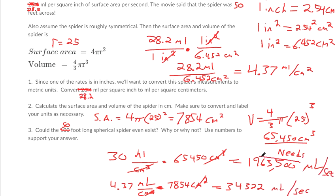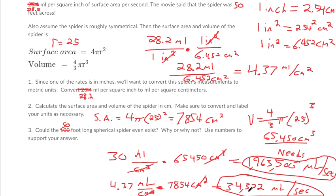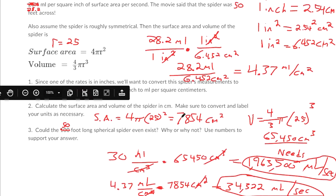So this is how much this theoretical spider needs per second. It needs over a million milliliters per second. This is how much we can give them based on the surface area. We can only get 34,322 milliliters per second. So this spider can't exist because it doesn't have the oxygen capacity. The surface area isn't big enough.